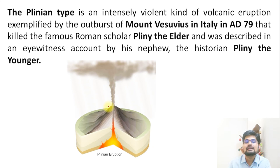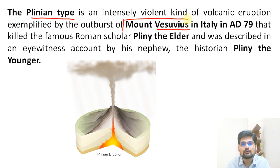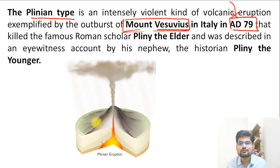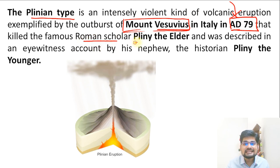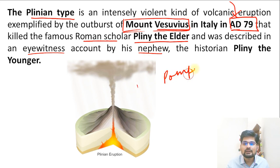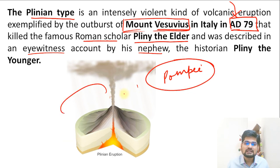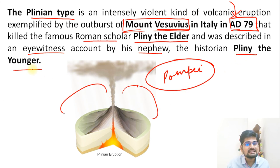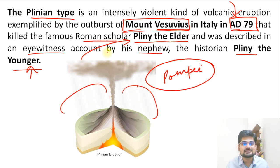The most violent type is the Plinian type, also known as Vesuvian, based on Mount Vesuvius which erupted in AD 79 during the Roman era. Roman scholar Pliny the Elder died in this eruption, described by his nephew Pliny the Younger. The city of Pompeii was buried under material from this eruption. It is considered the most violent type in the nature-of-eruption classification.